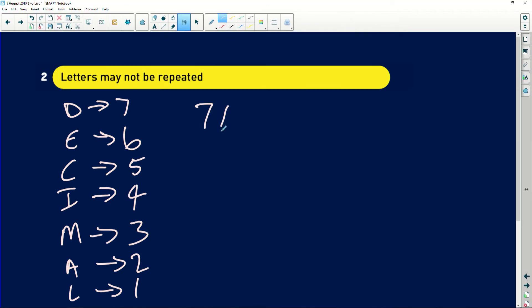So this will be seven multiplied by six times five times four times three times two times one. In simple terms, this is the same as seven factorial. Because seven factorial means you are multiplying the seven by the number less than it until you get to the minimum number, which is one.